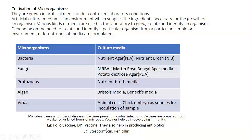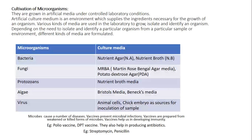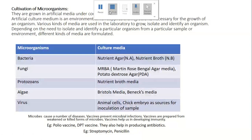Microbes cause a number of diseases. Vaccines prevent microbial infections. Vaccines are prepared from weakened or killed forms of microbes and help us develop immunity. For example, polio vaccine and DPT vaccine. Microbes also help in producing antibiotics, for example streptomycin and penicillin. This is the end of the lesson.